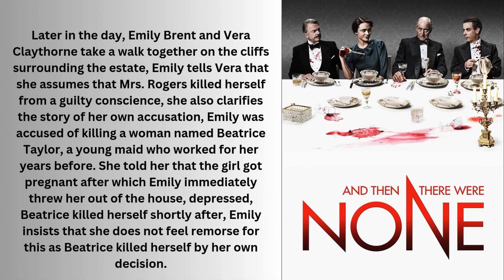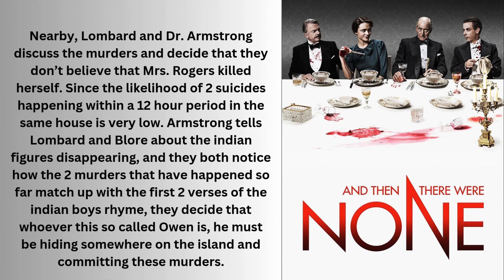Later in the day, Emily Brent and Vera Claythorne take a walk together on the cliffs. Emily tells Vera that she assumes Mrs. Rogers killed herself from a guilty conscience. She also clarifies her own accusation: Emily was accused of killing a young maid named Beatrice Taylor who worked for her years before. The girl got pregnant, after which Emily immediately threw her out of the house, and depressed, Beatrice killed herself shortly after. Emily insists she does not feel remorse as Beatrice killed herself by her own decision. Nearby, Lombard and Dr. Armstrong discuss the murders and decide they don't believe Mrs. Rogers killed herself, since the likelihood of two suicides happening within a 12-hour period in the same house is very low. They both notice how the two murders match up with the first two verses of the Indian Boys rhyme, and decide that whoever Owen is, he must be hiding somewhere on the island committing these murders.